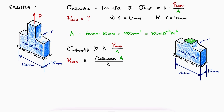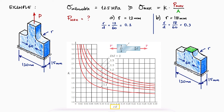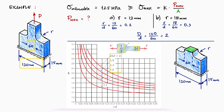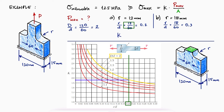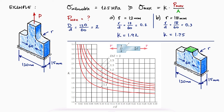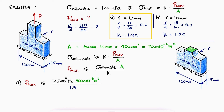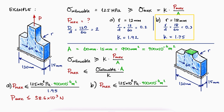The stress concentration factor for a flat bar with fillets requires the ratio between the fillet radius and the smaller width (r/d) for the x-axis value, and the ratio between the two widths to identify which curve to use. With r/d equal to 0.2 and looking at the top curve, we find a K value just above 1.9. For an x-axis value of 0.3, we find K just below 1.8. It's often useful to be conservative and round upwards to account for the worst-case scenario. For a 12 mm radius fillet, the external load P should not exceed 58.6 kN. For an 18 mm radius fillet where K is 1.75, P should not exceed 64.3 kN.